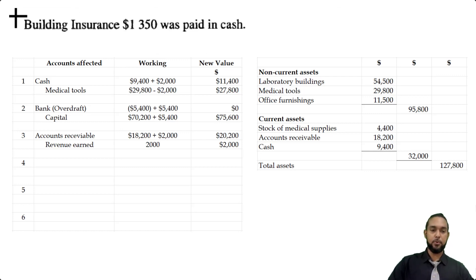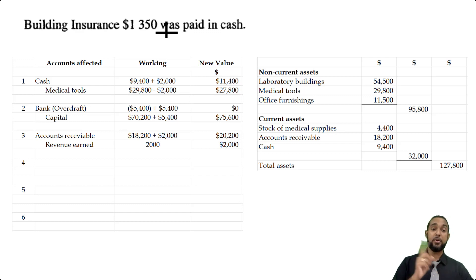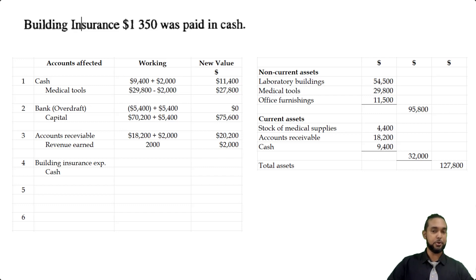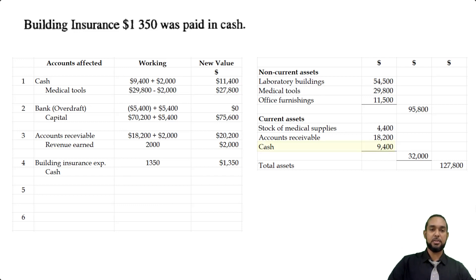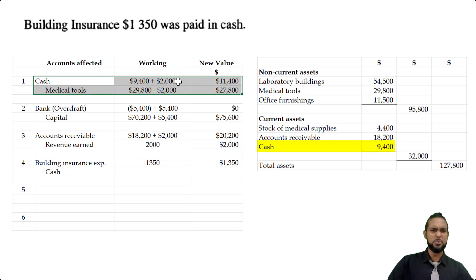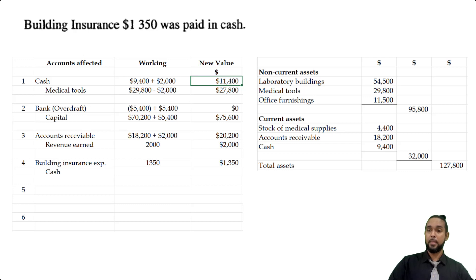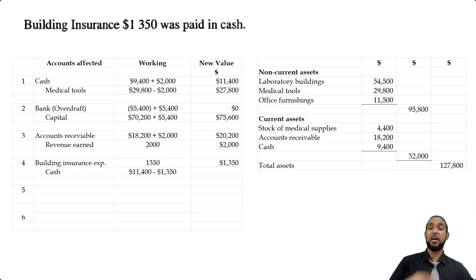Item four: building insurance of $1,350 was paid in cash. Insurance is an expense — we debit insurance expense and credit cash. Building insurance expense had no opening balance, so we add $1,350. For cash, remember from transaction one it ended up at $11,400 — not the original $9,400. So we take $11,400 minus $1,350 because paying an expense reduces cash.